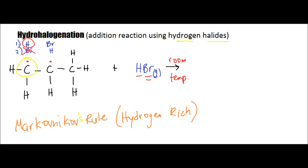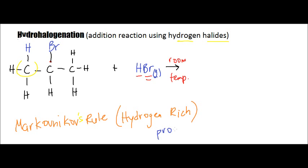So the bond that's going to occur here is with hydrogen, which means on the other side the only option available to bond will be with the bromine. In the end, we started off with a propene molecule and we ended with what we call a 2-bromopropane molecule. This is also an addition reaction.